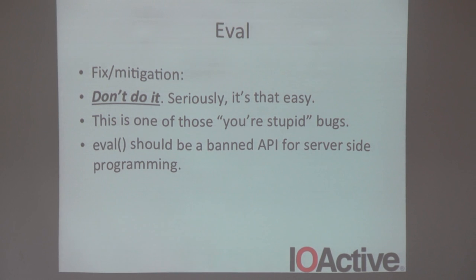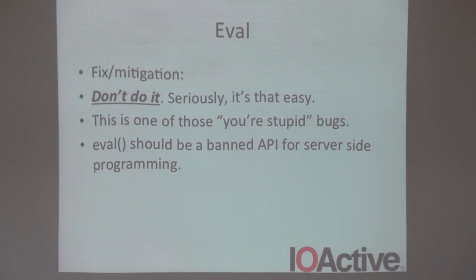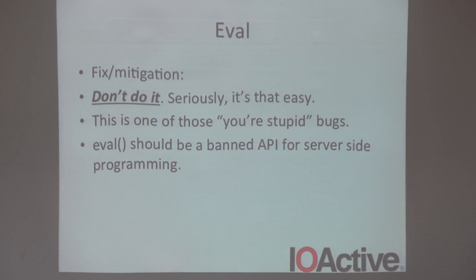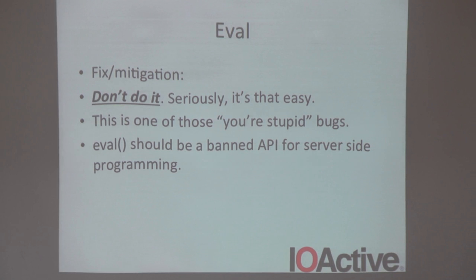How do you fix eval? Just don't do it. Eval should be a banned API — there's never an okay reason to call eval on the server side. A colleague of mine categorizes these as 'you're stupid' bugs, where you go to the dev and they say 'I'll fix it immediately and no one will ever notice.' If someone comes to you and says you have an eval bug, drop everything else, fix it, and make sure no one knows you put it there.